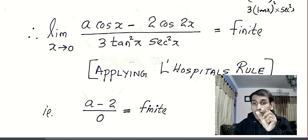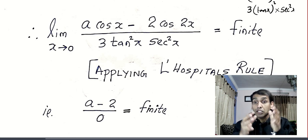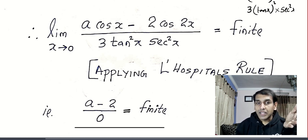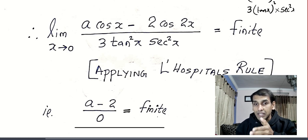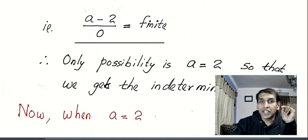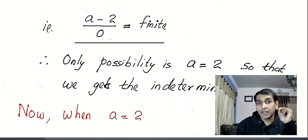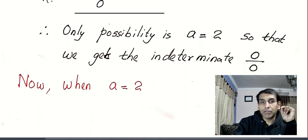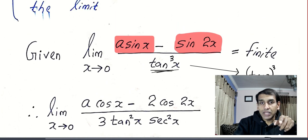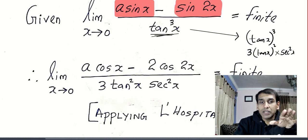As x becomes nearer to 0, the fraction becomes very large. So writing infinity on one side equal to a finite value is not sensible. The only possibility is that the numerator must also become 0 — meaning a must equal 2, so that it remains an indeterminate form. So we got the value a = 2. You can also try the same problem using series expansion, but this is the easiest method.